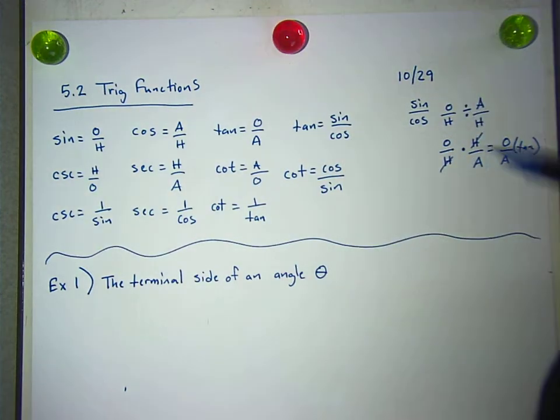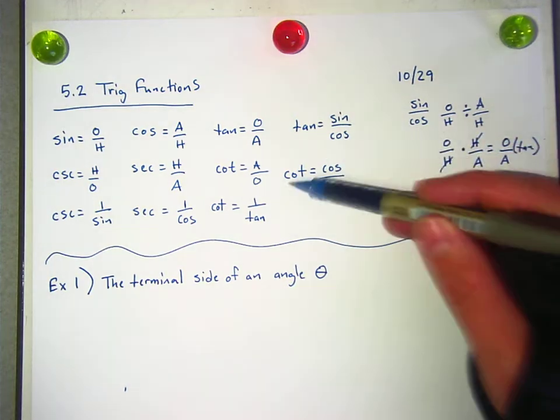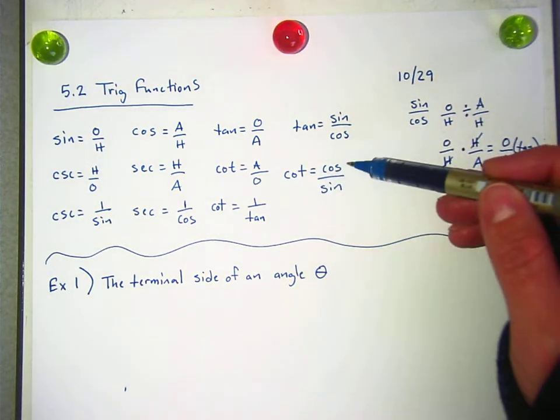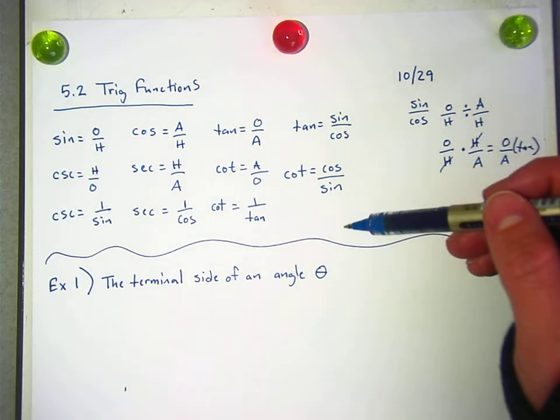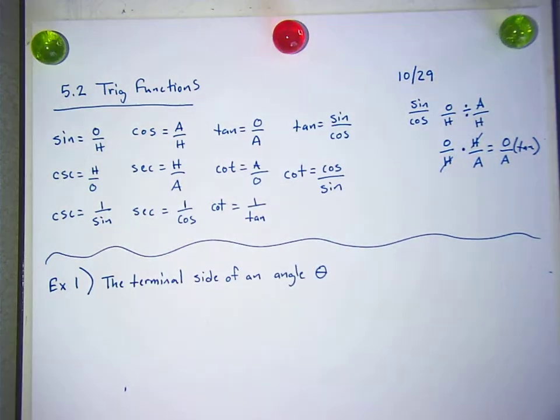Also, we did a little proof over here that shows that tangent is also equal to sine over cosine, and since cotangent is the reciprocal, it is cosine over sine. I know this is overwhelming, but we will figure it out, especially as we're using it, and I'll make sure to catch you up on the unit circle on Monday.